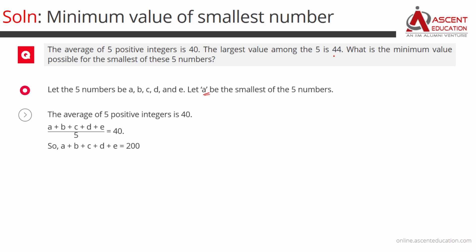The largest value among the 5 is 44. Now, A plus B plus C plus D plus E is equal to 200. A is the smallest, so A is the minimum value we want to find.